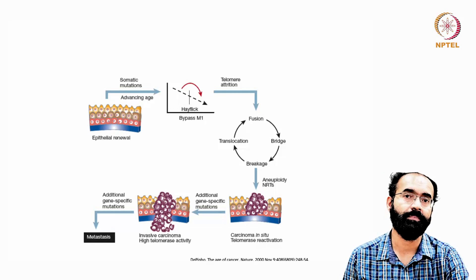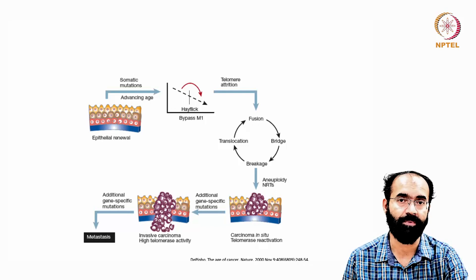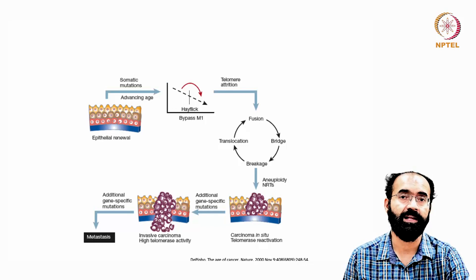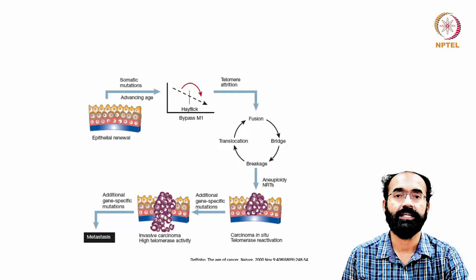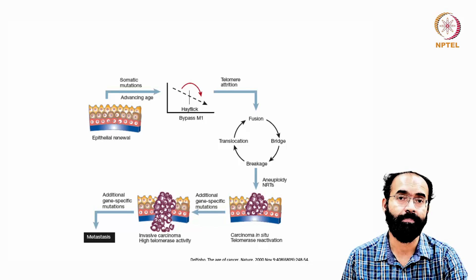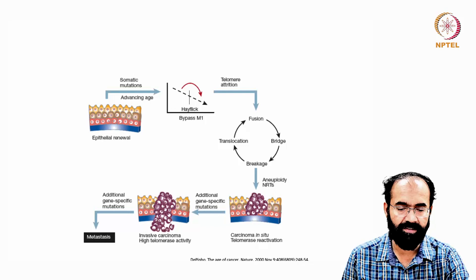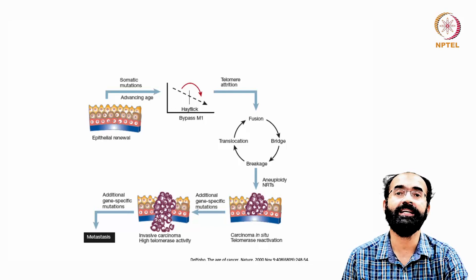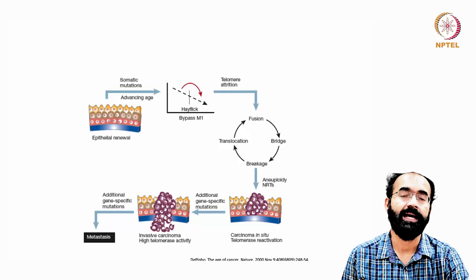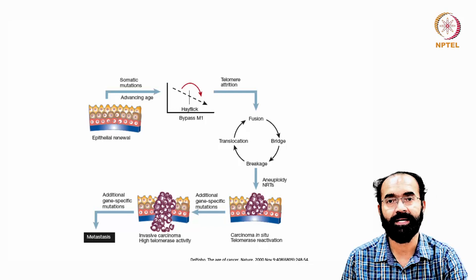With genomic instability, aneuploidy, and reactivated telomerase, further mutations are needed to become cancer — and they come much more easily because this unstable genome is not performing checkpoints properly. There is no G1, S, or G2 checkpoint verification. Acquiring mutations becomes much easier in these genetically unstable cells. This leads to invasive carcinoma, which always has telomerase activity; without it, they cannot survive. Additional gene-specific mutations reiterate cancer progression, ultimately leading to metastasis.